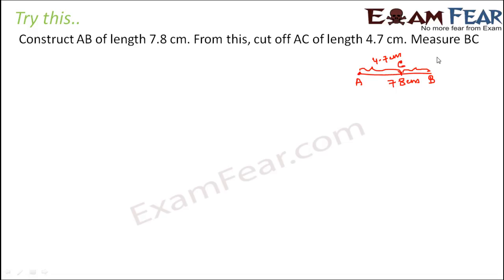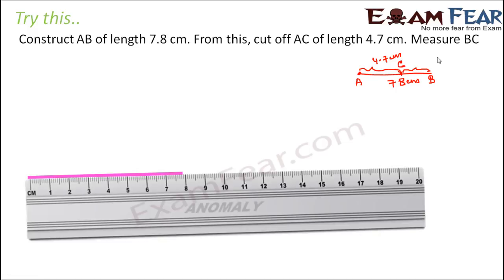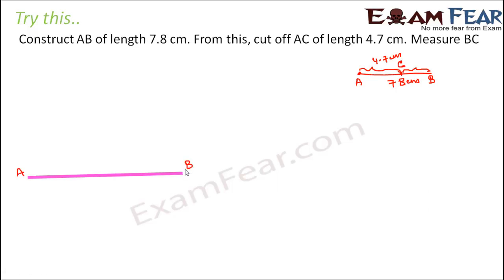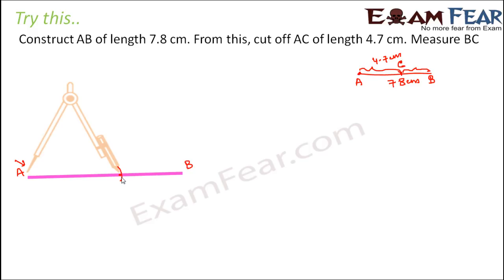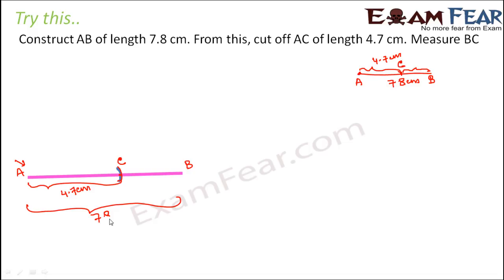Using our ruler, we first draw line segment AB of length 7.8 centimeters. Then to mark point C at a distance of 4.7 centimeters from A, we place the ruler from A and use the compass — the pointed tip at A and the pencil tip marking the point at 4.7 centimeters. We make an arc to mark that point as C. So AC is 4.7 centimeters and the total length AB is 7.8 centimeters.